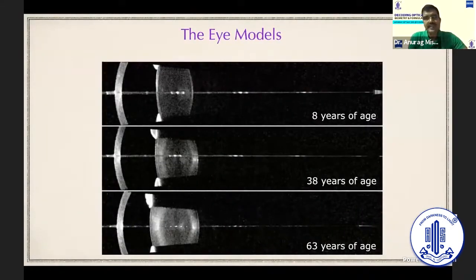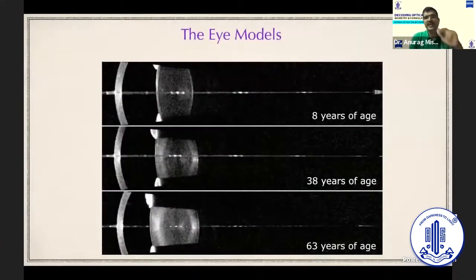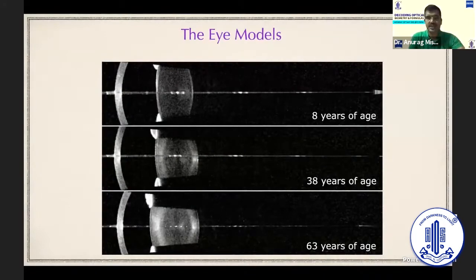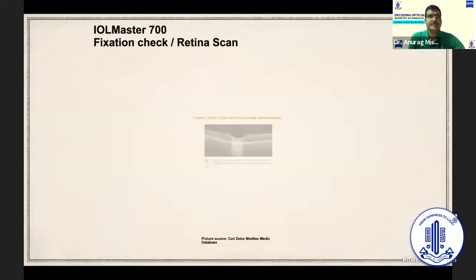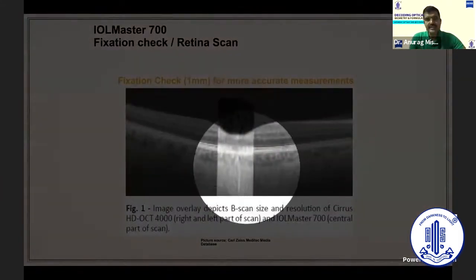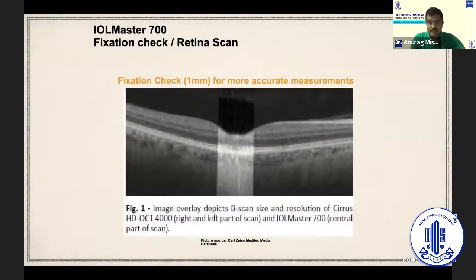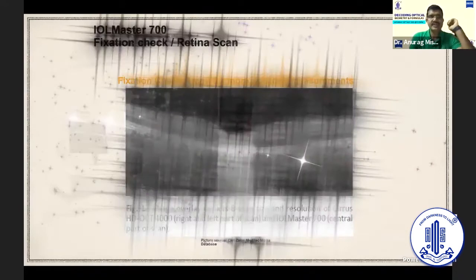The machine has in its database different eye models pertaining to different age groups of the patients. So the moment you punch in the date of birth of the patient in question, it automatically calculates what should be the signal to noise ratio it should employ to calculate the axial length in that particular patient. It also has a fixation check. It takes the center of the fovea, gives us this picture on the screen so that we can cross-check where the light has echoed from. And the central one-millimeter area is where it scans. It takes 256 scans of the same point and repeats it five times. So the accuracy level is very, very high as far as this is concerned.